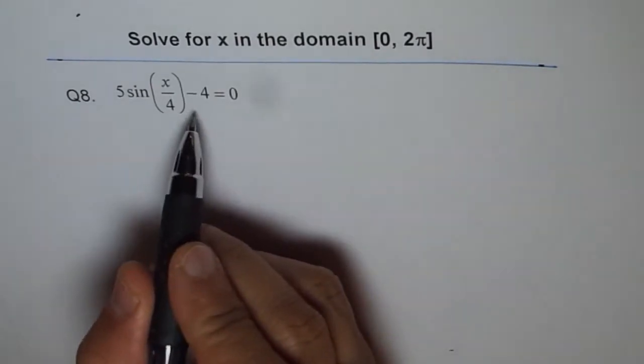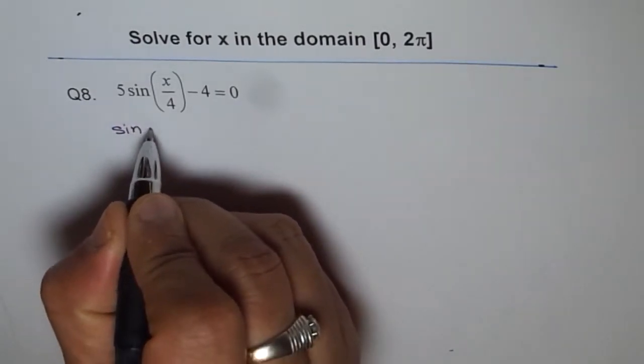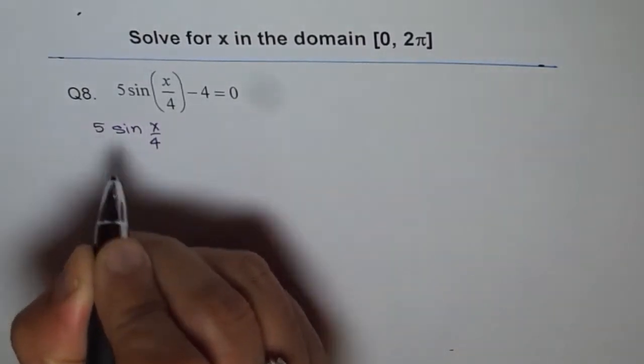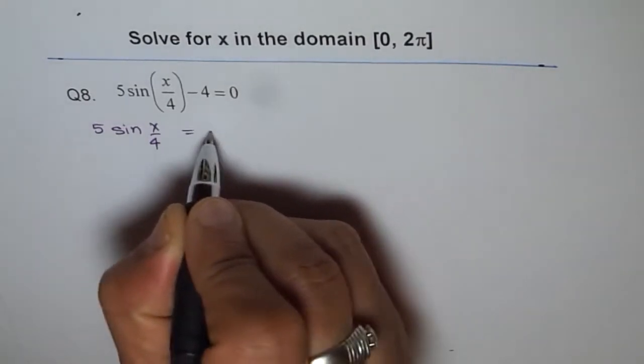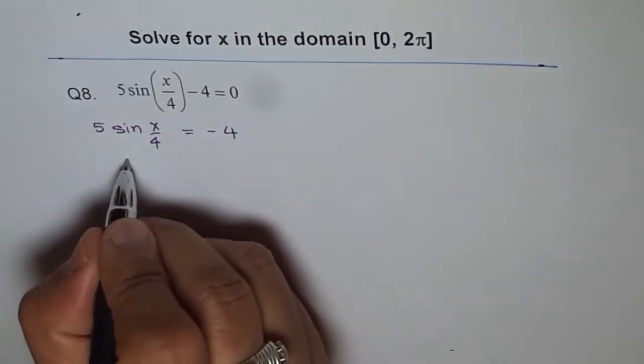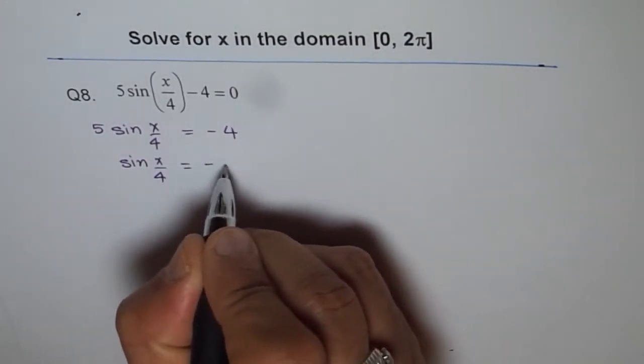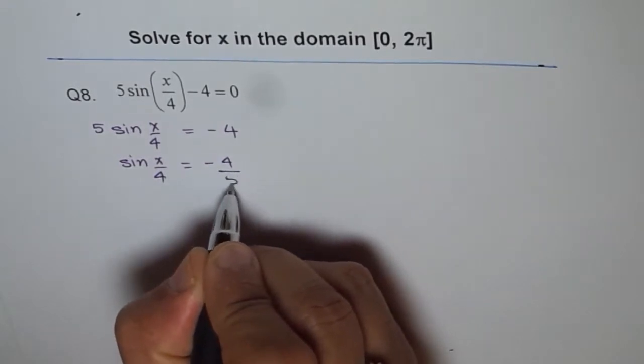So we can solve it and write this as sin(x/4). Let's first write 5 sin(x/4) = -4. We'll take this and then divide by 5, so we get sin(x/4) = -4/5.